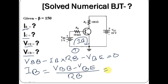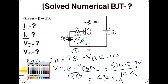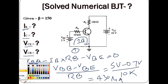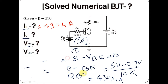So IB equals VBB minus VBE divided by RB. You have VBB equals 5V, VBE equals 0.7V, and RB equals 10K ohms. Solving this, the value of IB equals 430 microampere.